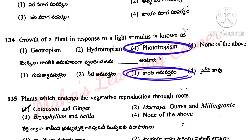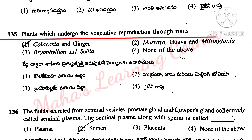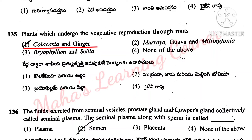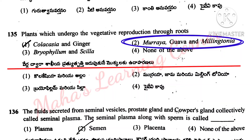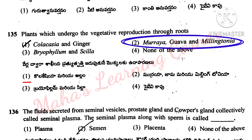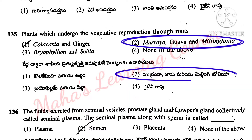Plants which undergo vegetative reproduction through roots. Options: Colocasia and ginger, Murraya, Goa and Millingtonia, Bryophyllum and Silla, none of the above. Correct answer option 2: Murraya, Goa and Millingtonia.